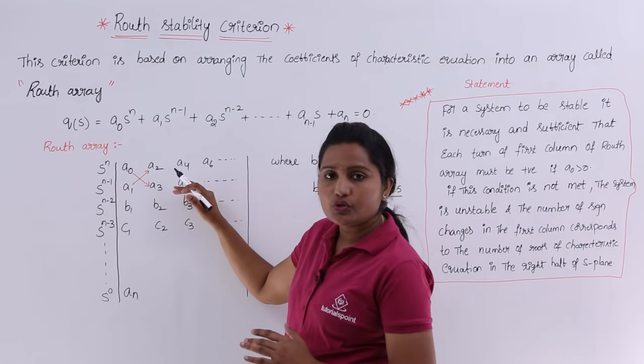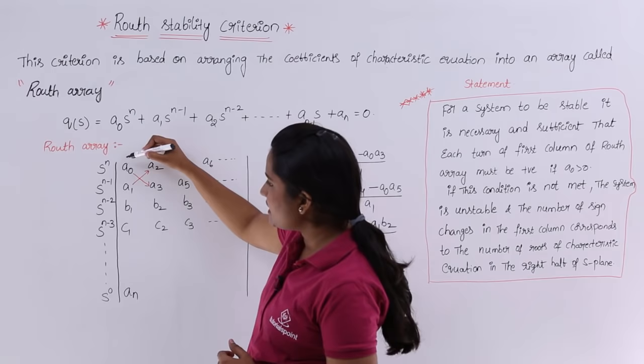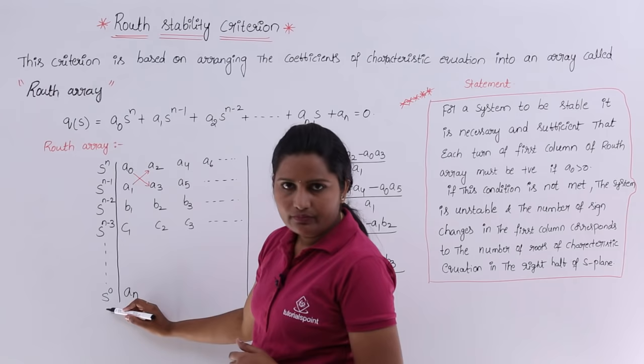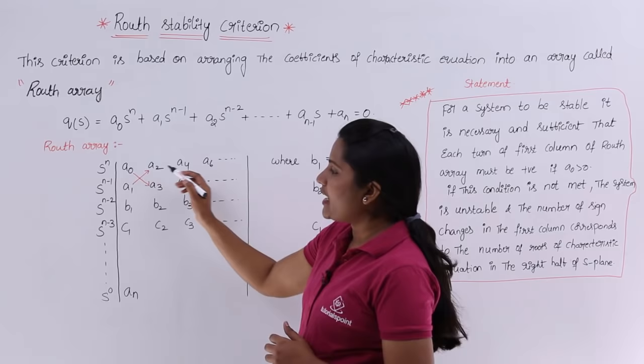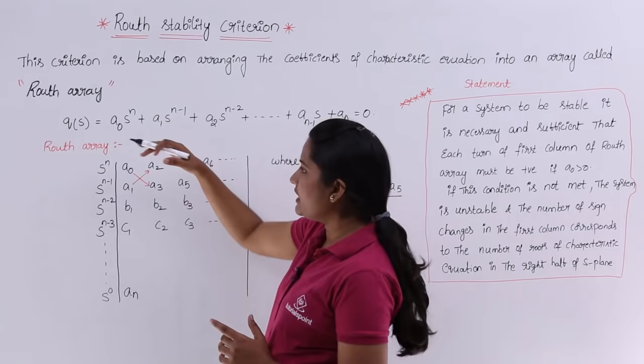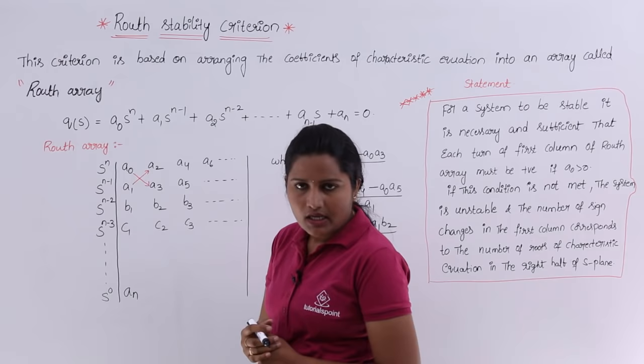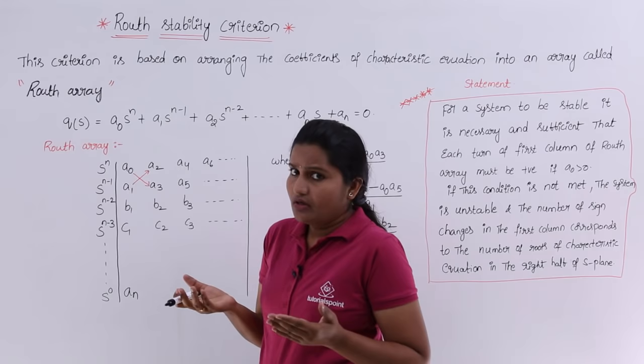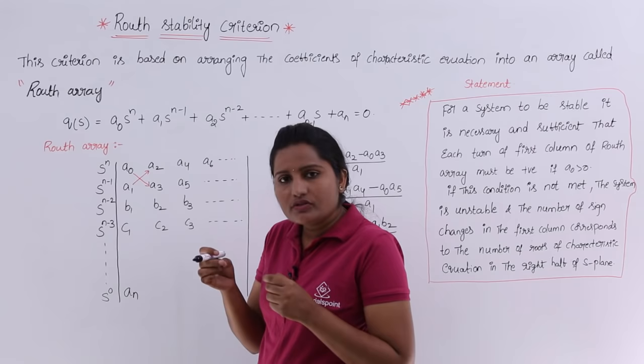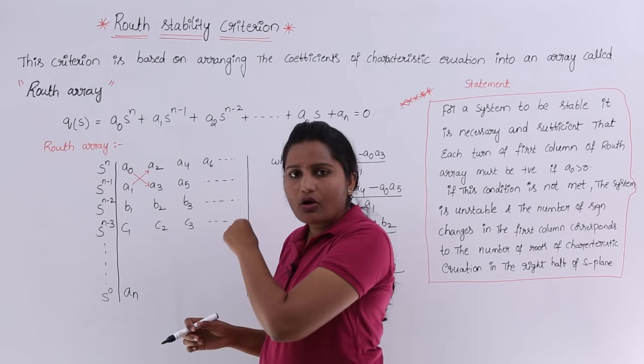When writing each row, the first two rows of the Routh array are filled by the coefficients of the characteristic equation. You consider from s power n down to s power 0, placing coefficients a₀, a₁, a₂, a₃, a₄, a₅, a₆ and so on. However many coefficients you have, all of them should be placed in these two rows.